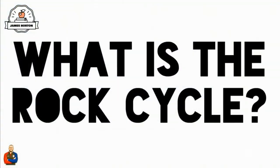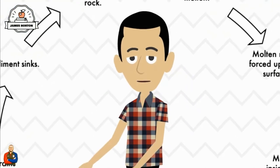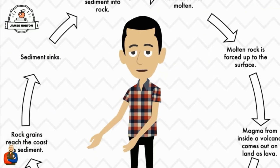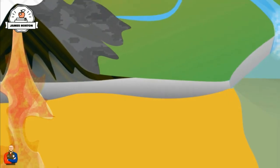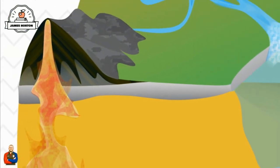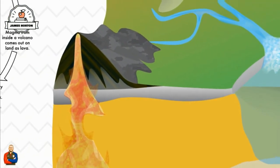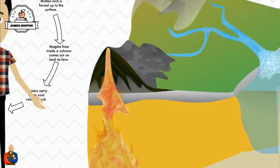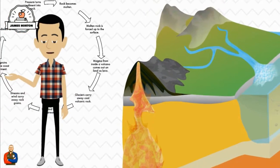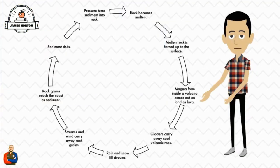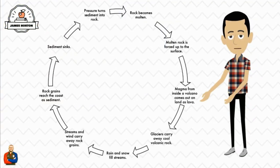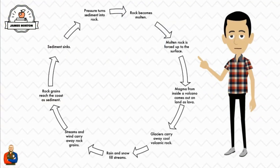What is the rock cycle? Well, during the rock cycle, rocks form deep in the earth. They move and sometimes change. Sometimes they migrate to the surface and eventually return below the ground. This movement of rock creates three kinds of rock: igneous, sedimentary, and metamorphic.